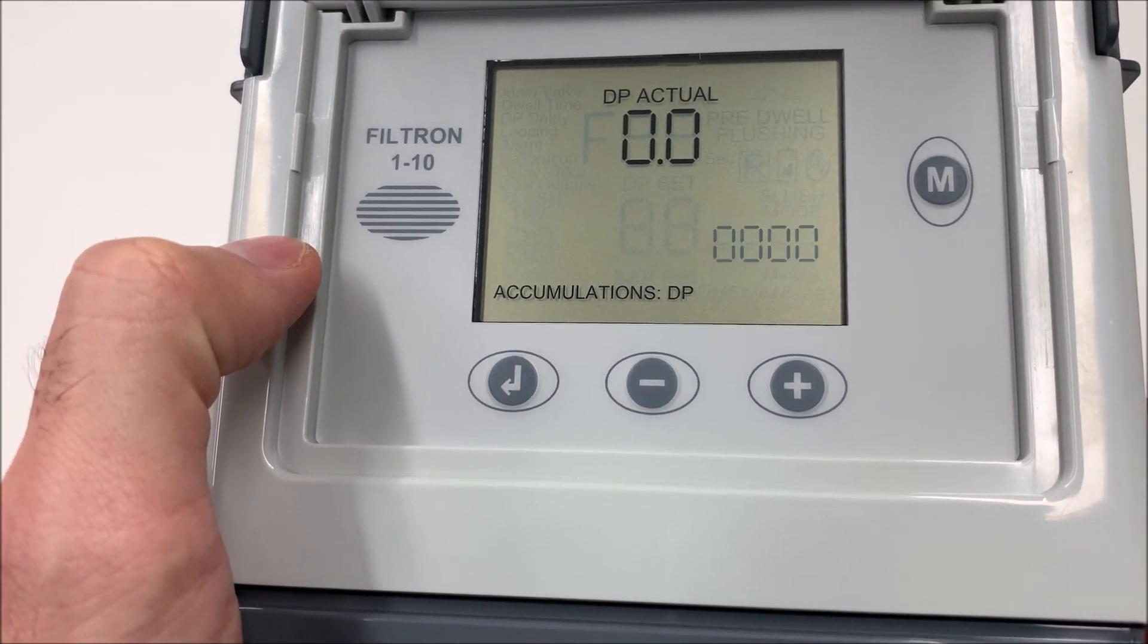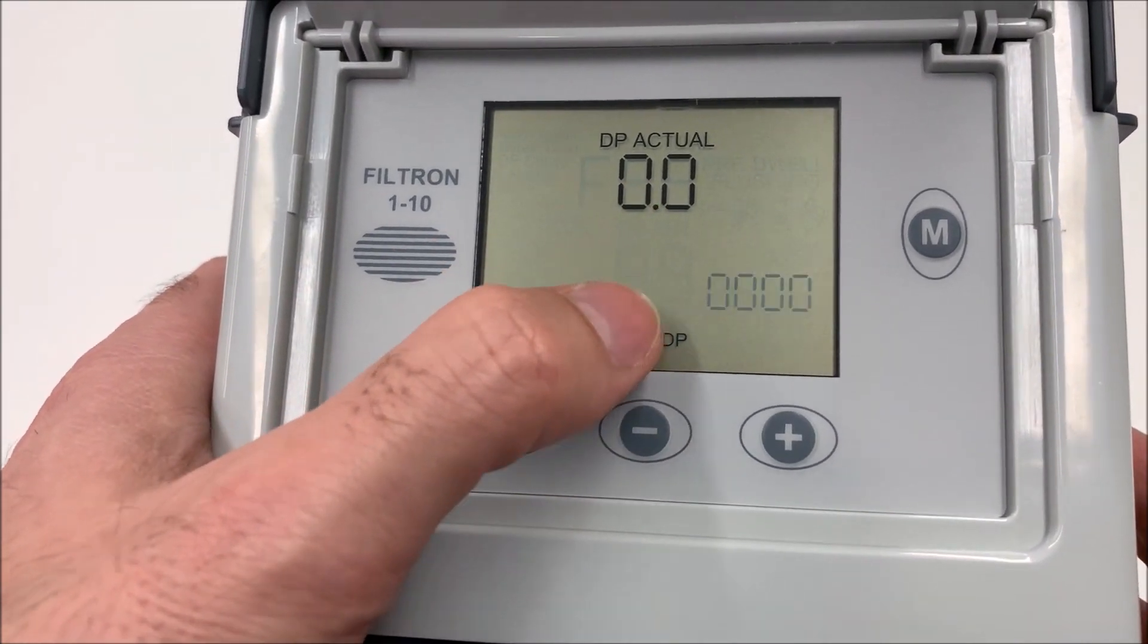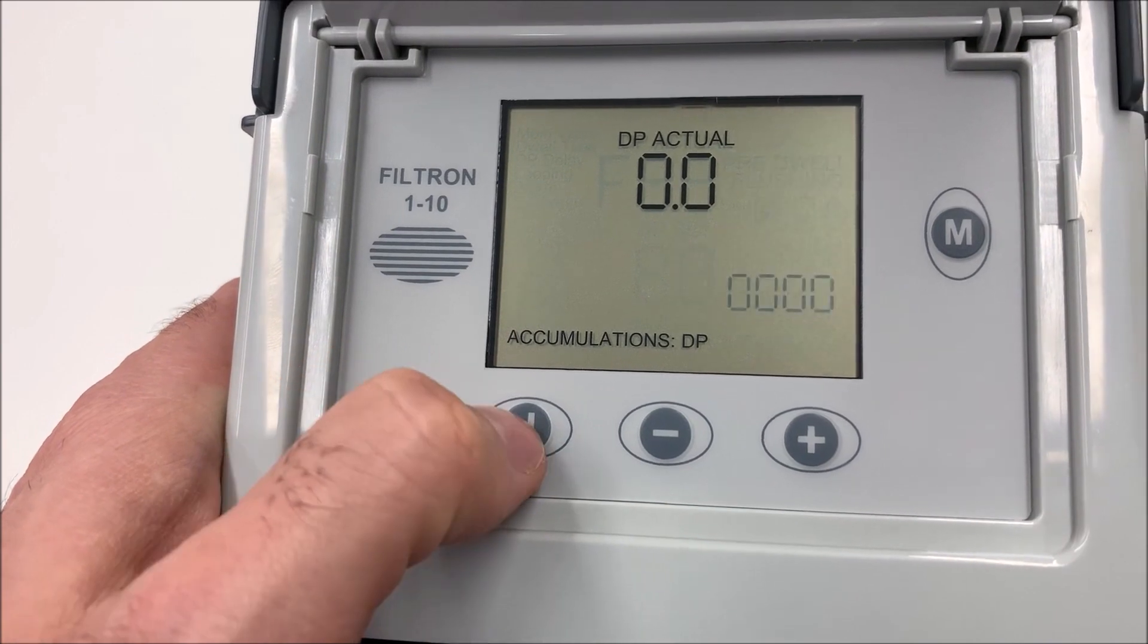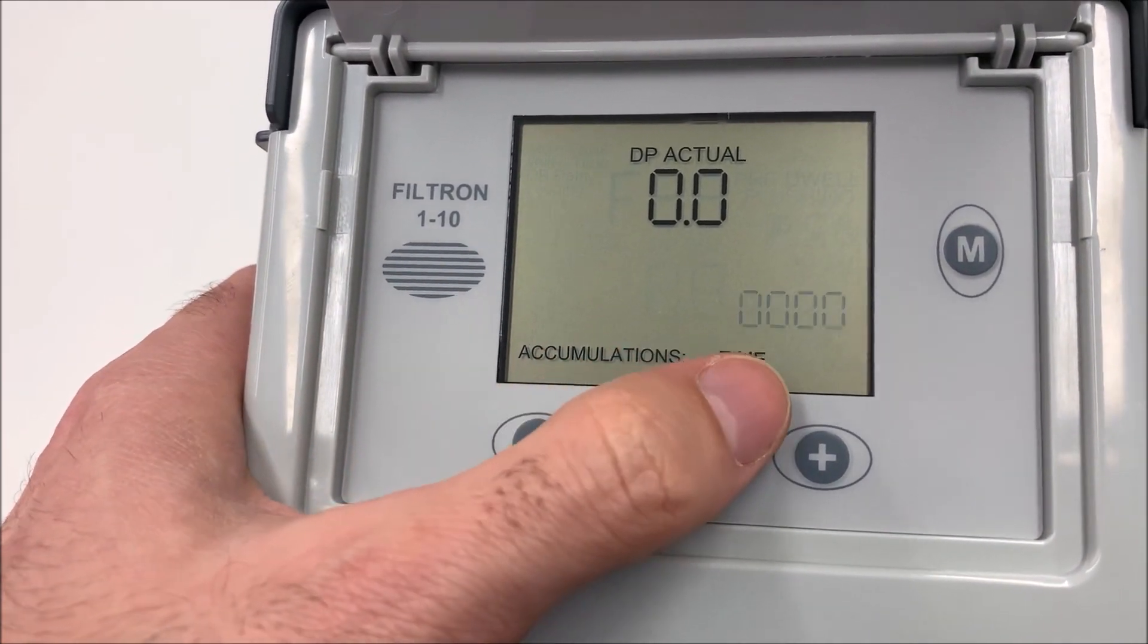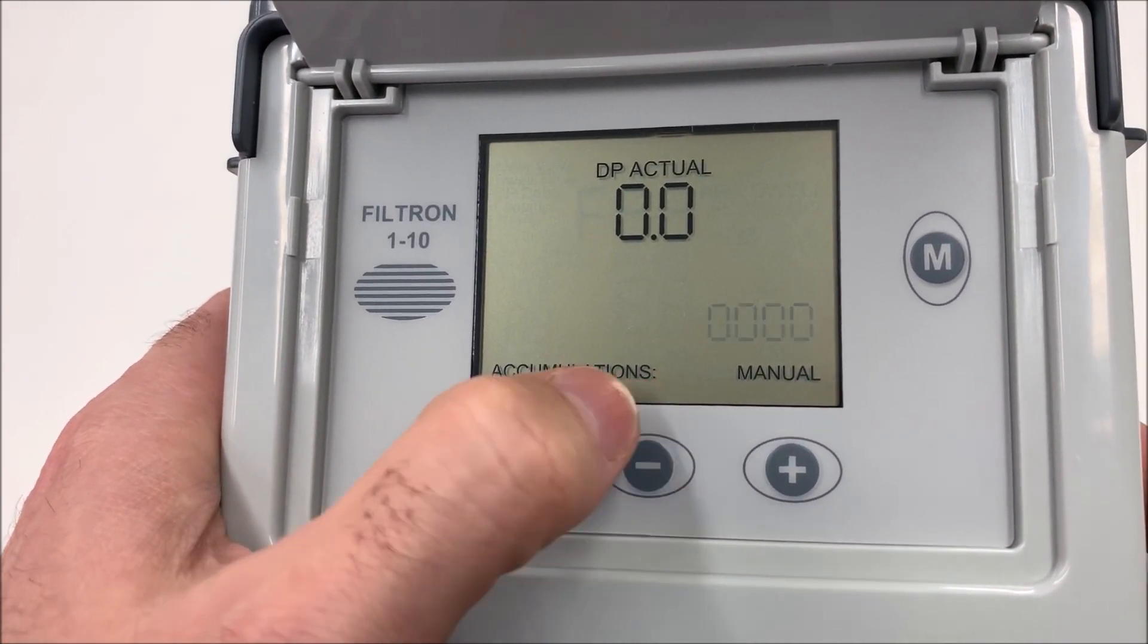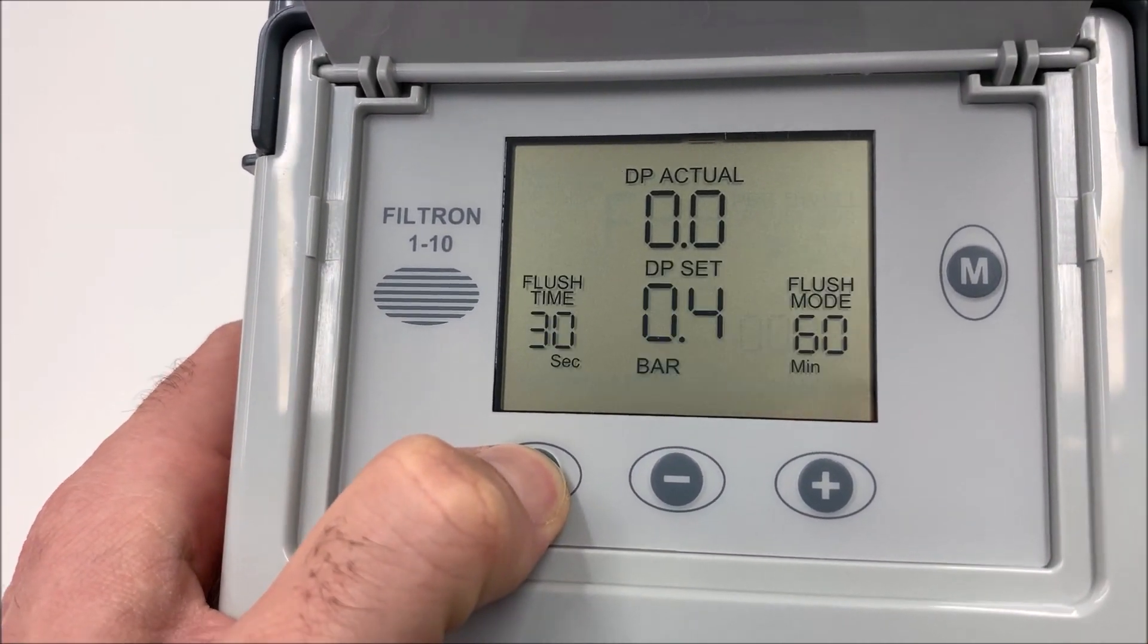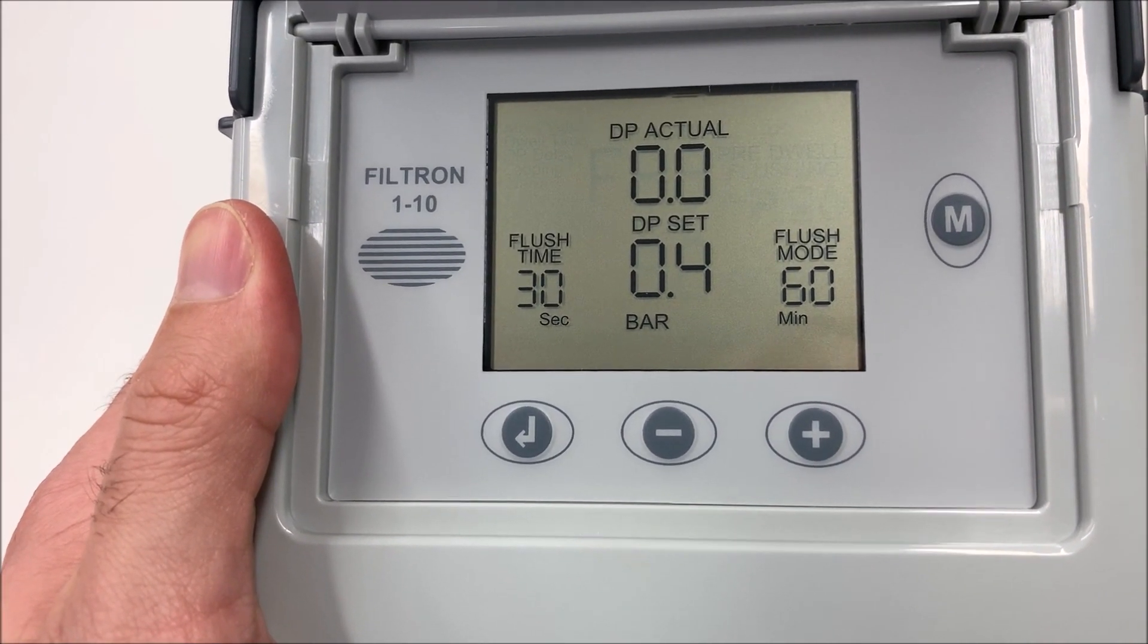Then we will continue. Number of accumulated DP backwash. As this is a brand new controller, there is no backwash accumulated. Number of accumulated backwash by time. Once again, no one. Number of accumulated backwash manual. Once again, no one. This is the first layer of setting of the controller.